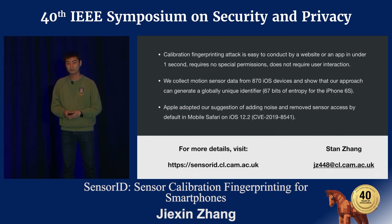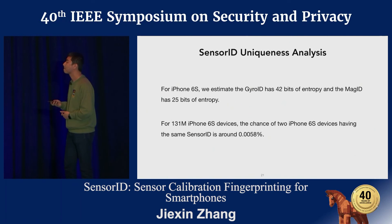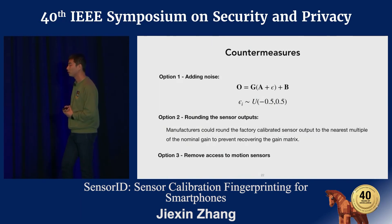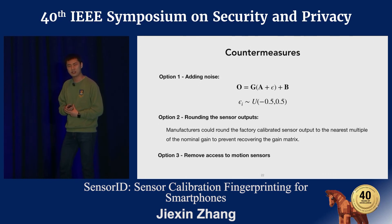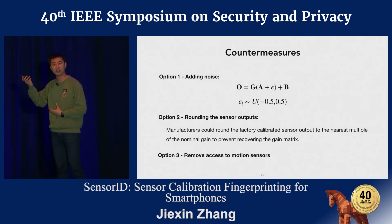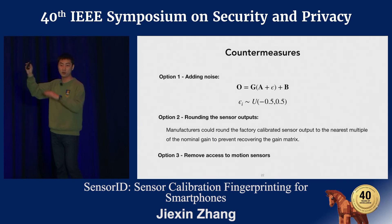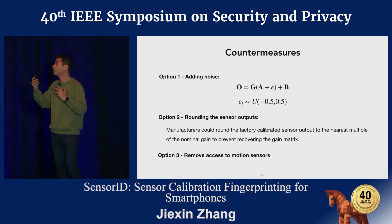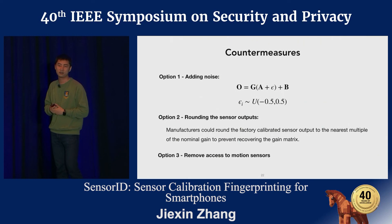Question from Alaa El-Momani, Ulm University: Regarding your countermeasures — options one and two — isn't it scientifically speaking the same to add noise or to round the sensor output? Response: Both of them are not completely secure, because you can still perform this attack using probabilistic attacks. I don't have a quantitative analysis of which is more secure, because for the first option it depends on which noise you add to the ADC. For example, we proposed adding uniformly distributed noise, but it's more secure to add Gaussian noise. The effectiveness of the first option differs a lot depending on the noise added.